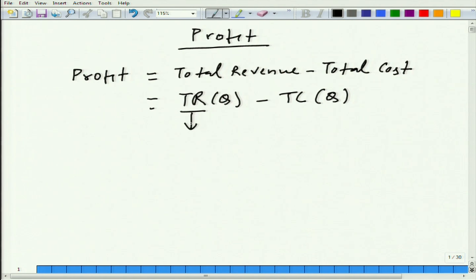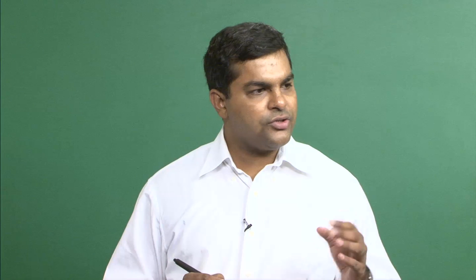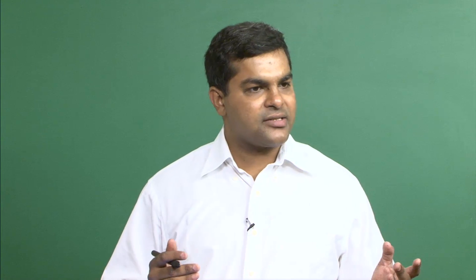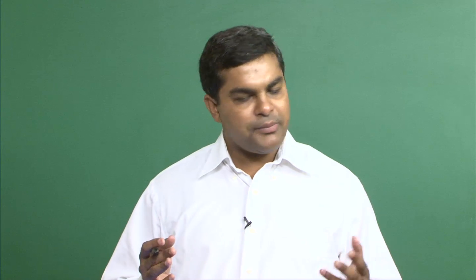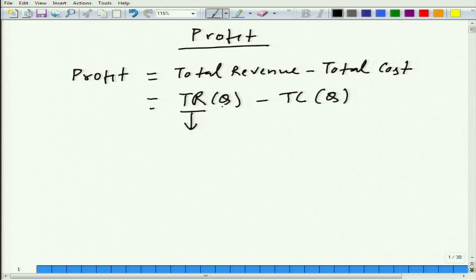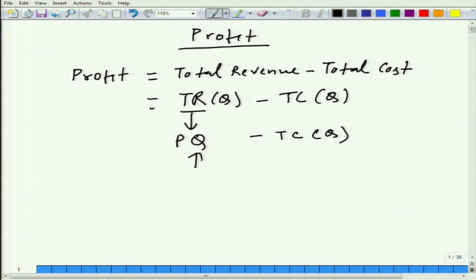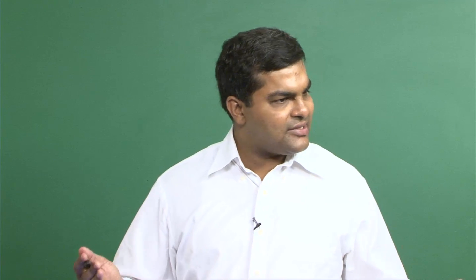Let us understand what is revenue — what do we mean by revenue? When you sell one unit of a good, you get paid equivalent to its price. So if you sell n number of goods, you get paid n multiplied by P. We are talking about total revenue for Q goods, so it is going to be P multiplied by Q. Q denotes output for a firm — the firm sells its output.